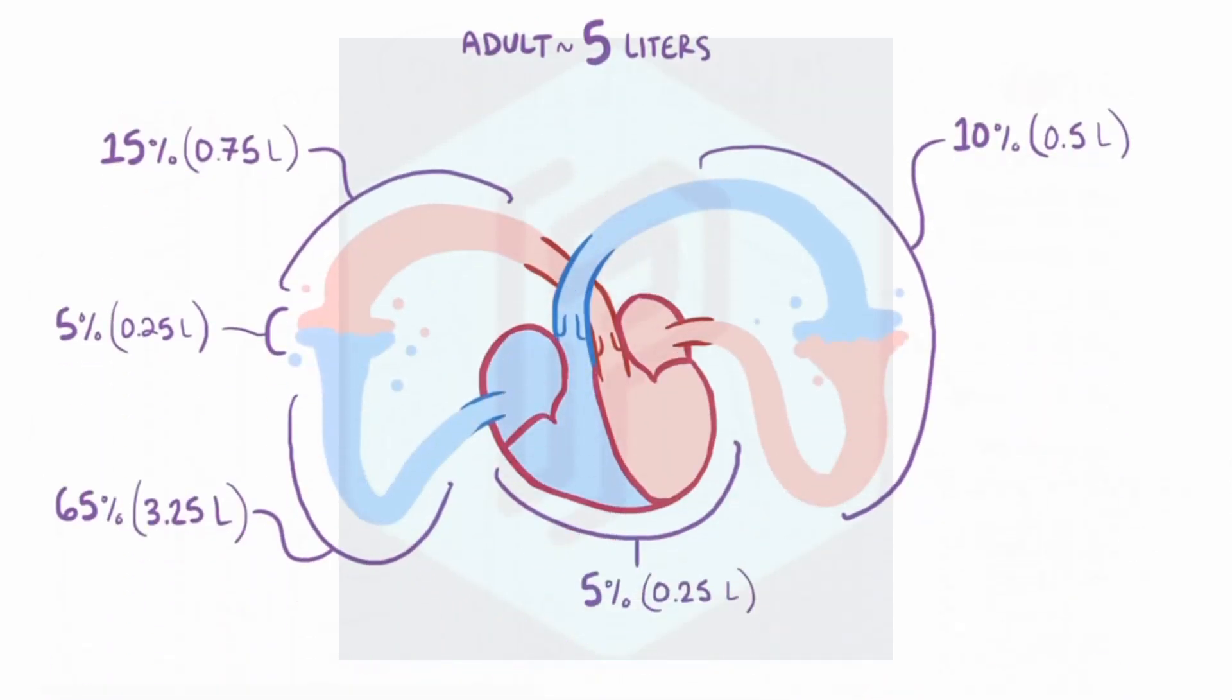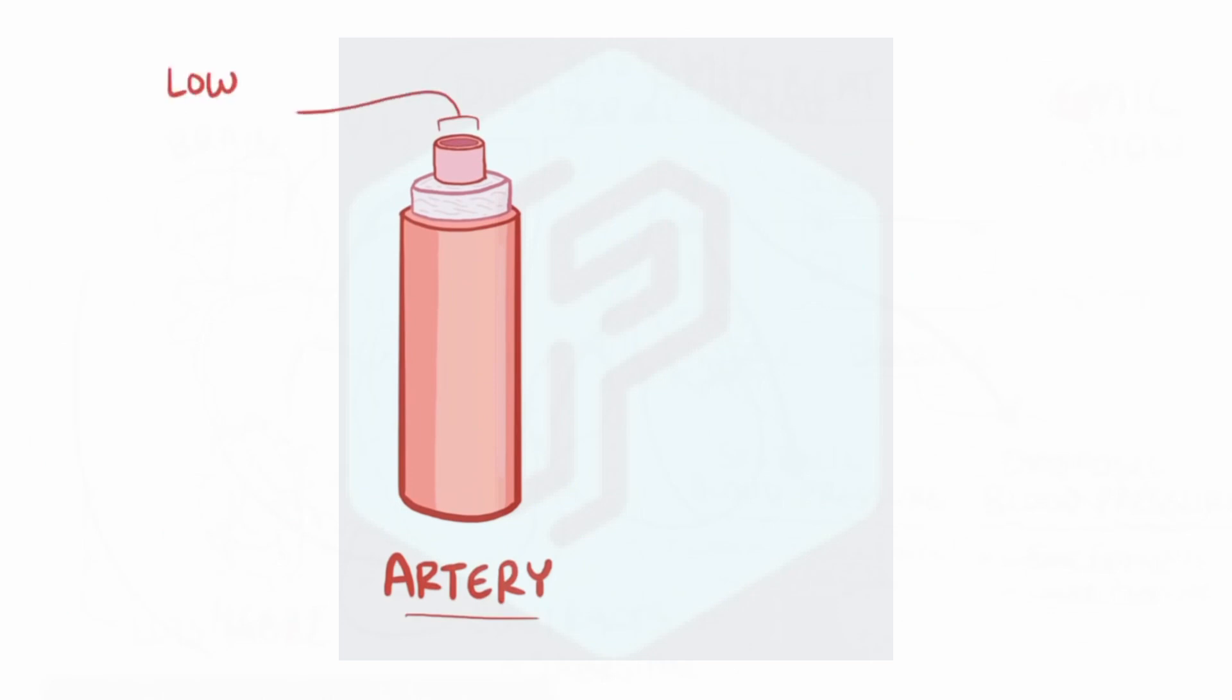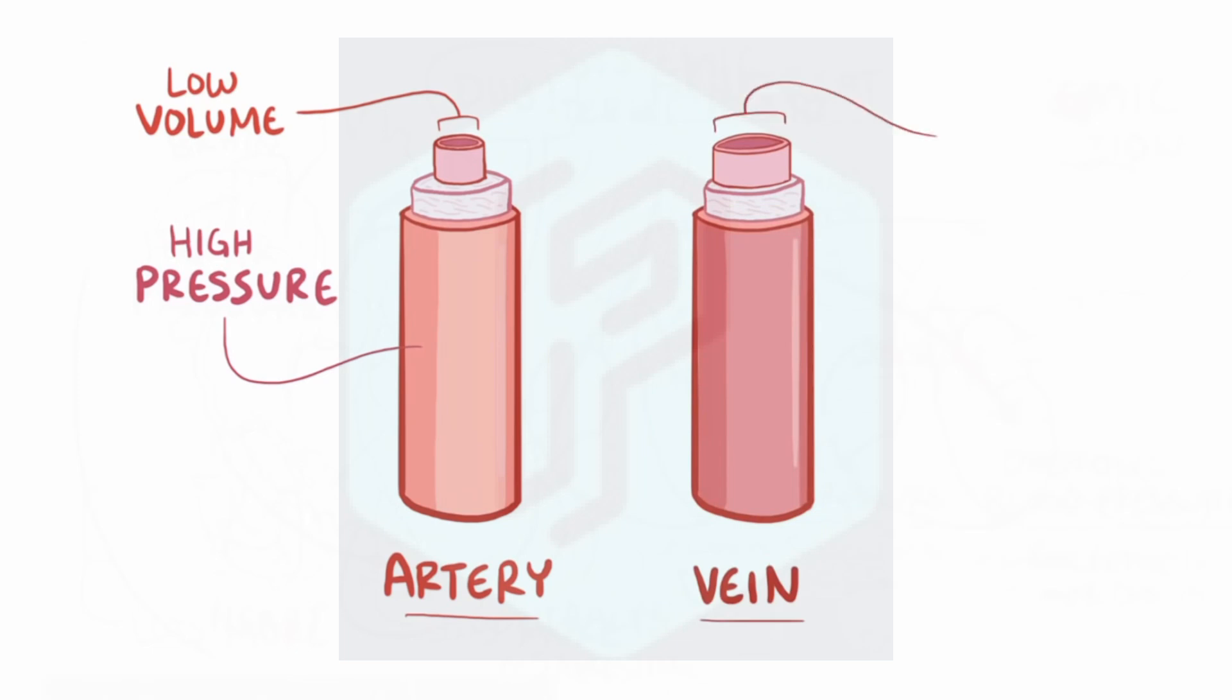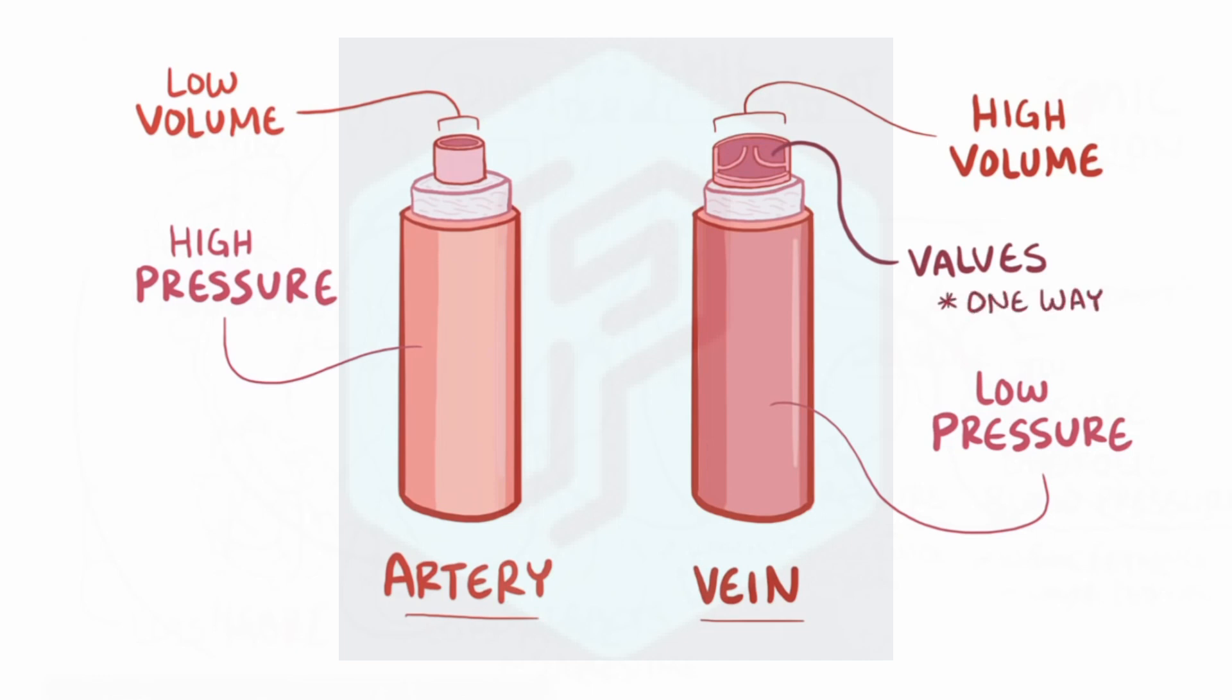Alright, so that was the systemic arterial blood, but you'll notice that there's a lot more blood in the systemic veins. With that being said, arteries are generally lower volume while also being under much higher pressure, and in contrast veins are usually high volume, low pressure vessels. And this explains why arteries and veins have different structures. For example, veins often have valves to help fight gravity and keep blood flowing in one direction back to the heart, whereas arteries don't need these valves because they're under higher pressure.